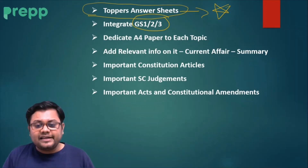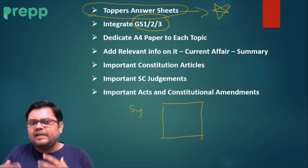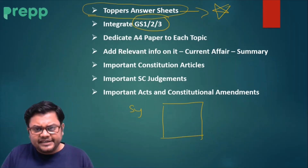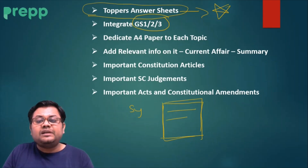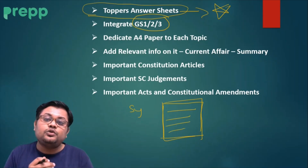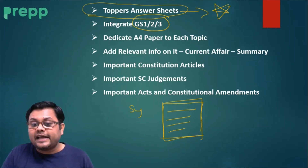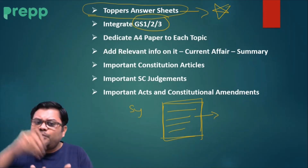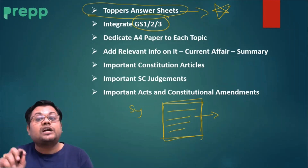For every topic, make an A4-size page — or use Evernote if you use a laptop. Write all important information related to that topic there, including current events and current affairs news. Everything related to one topic should be in one place, so when you revise, all relevant information is available at a single location and you can reproduce it well.